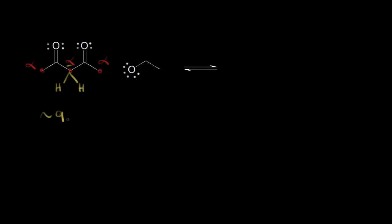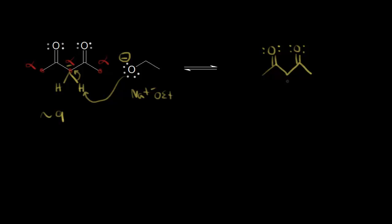Since a beta-diketone has such acidic protons, we don't need a super strong base like LDA. We could use something like sodium ethoxide — a negative one formal charge on this oxygen — to deprotonate this beta-diketone. A lone pair of electrons takes this proton, leaving these electrons behind on this carbon. Drawing the conjugate base: we have our carbonyls, and now we have our electrons on this central carbon giving it a negative one formal charge, with a hydrogen still bonded to that carbon.